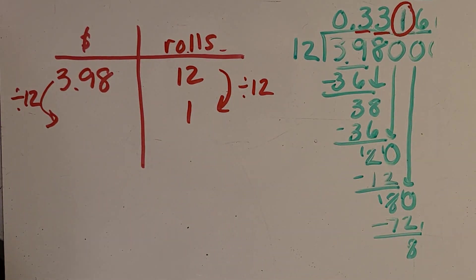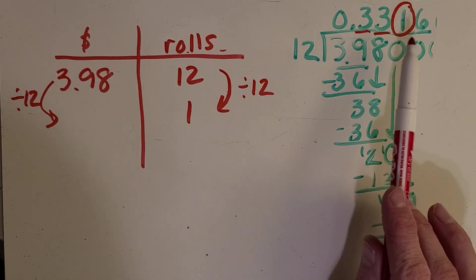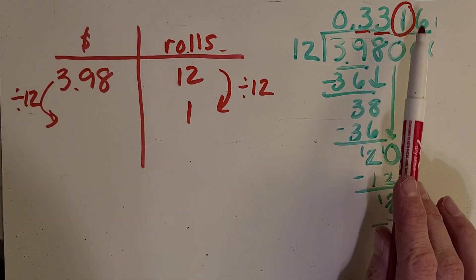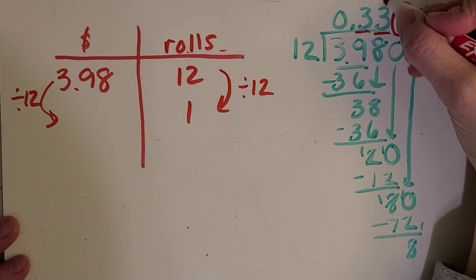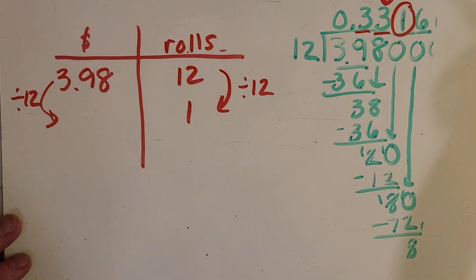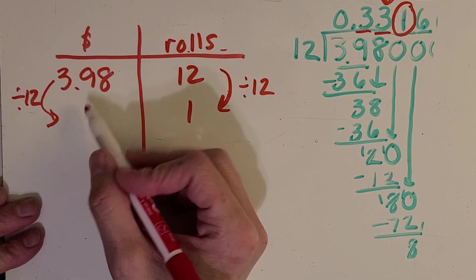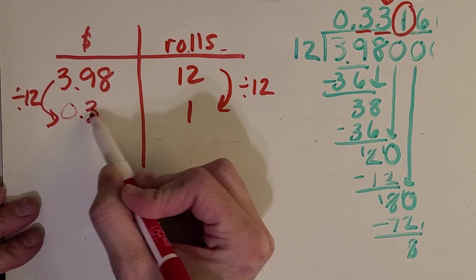And I can come back here to the tenths and hundredths place and then look at the thousandths to figure out my rounding. So what should I go with here? Should I stay at 33 cents or go up to 34 cents? What do you think? Okay you might remember that if this is zero to four you stay at whatever the digit is here. And if it's five to nine you go up. So we're going to say the unit price is 33 cents.